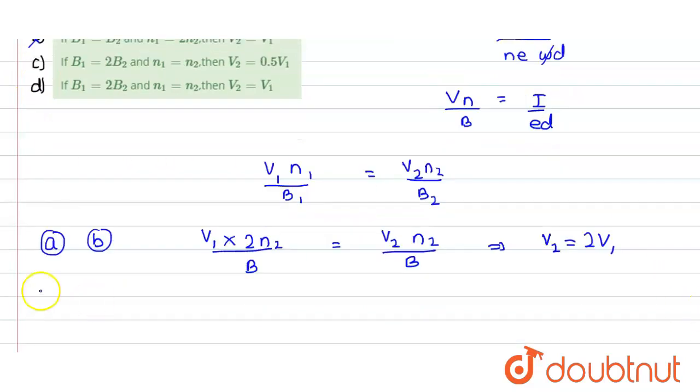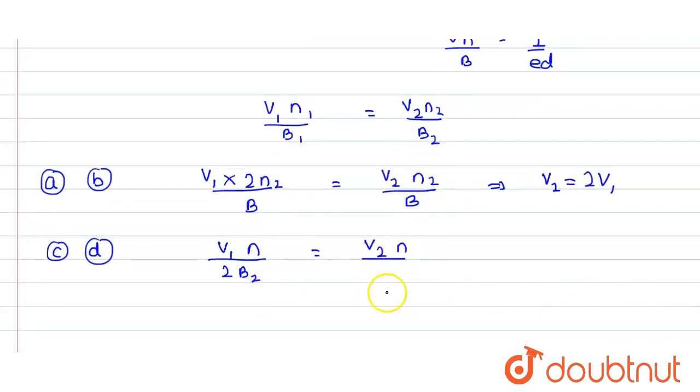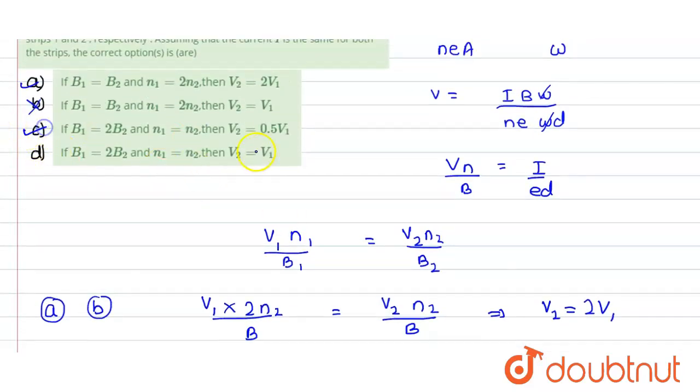Now in C and D, in option C and D, we have been given with N1 is equals to N2 and B1 is equals to twice of B2. Now we put all the result into this expression. So V1 into N divided by B1 is twice of B2, this would be equals to V2 into N divided by B2. Now if we calculate this we got the value of V2 would be equals to 0.5 of V1. Now if we check the option V2 equals to 0.5 of V1. So we can say that C would be the correct option and D would be the wrong. So the correct options are A and C.